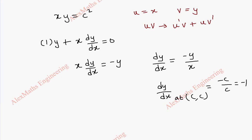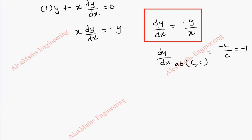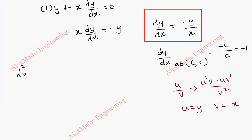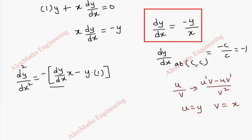Now we find d²y/dx² by differentiating dy/dx = −y/x again. We use the quotient rule (u/v method): the formula is (u'v − uv') / v². Here u = y and v = x, so we keep the minus sign outside. Thus d²y/dx² equals minus [(dy/dx · x − y · 1) / x²].